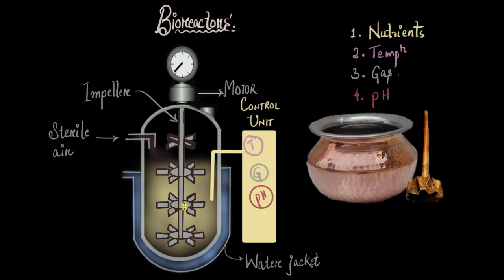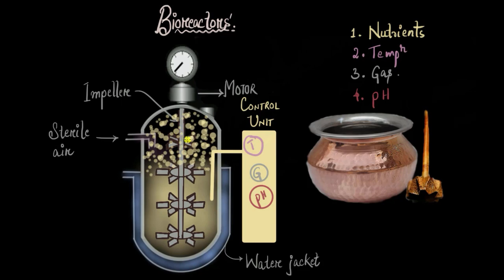If you observe closely, three sets of blades are submerged in the liquid inside the bioreactor, while one set of blades on top is also rotating but not mixing the culture broth. This top blade is called the foam breaker. Foam is formed at the interface of gas and liquid inside the bioreactor and creates havoc — it blocks passages, increases pressure within the vessel, and when foam bubbles burst, they kill many bacterial cells. So it is very important to get rid of this foam, and the topmost blade is there just to clear it out.